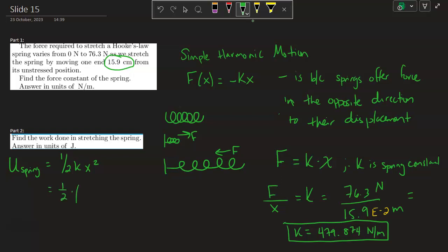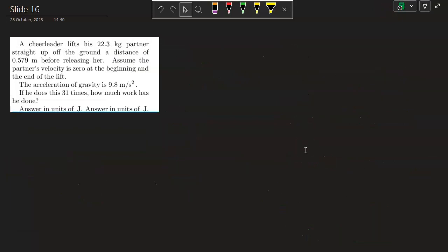By calculating this, the work done is one half times this k value, which you calculated in part one, 479.874, times how far you stretch it, 15.9 times 10 to the negative 2, and you square that. This is the k, the x. You do this calculation and you'll have your answer in units of joules. Okay, on to slide 16.